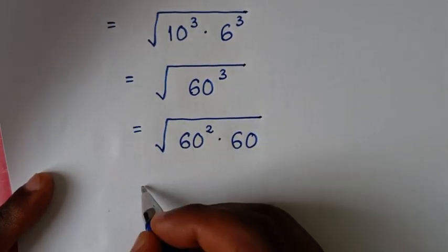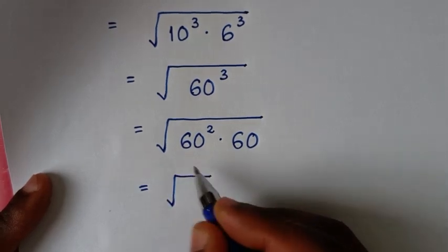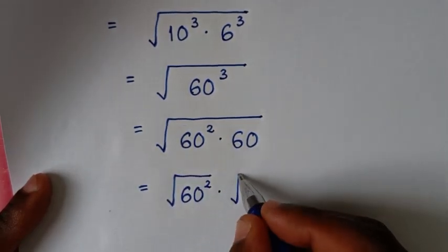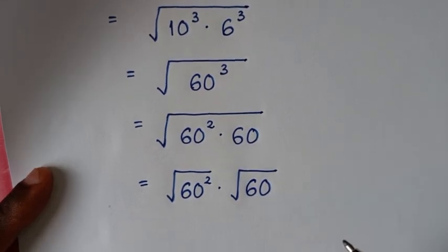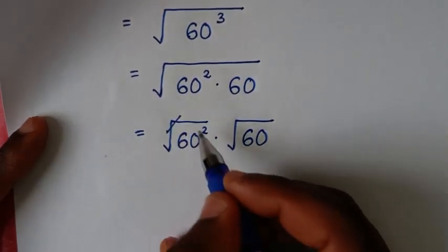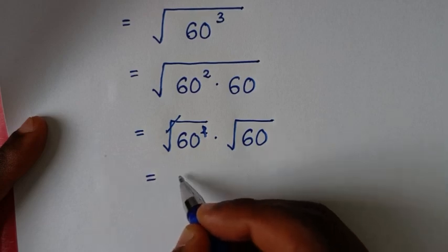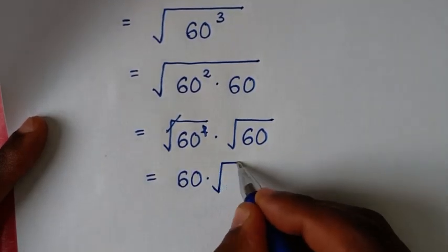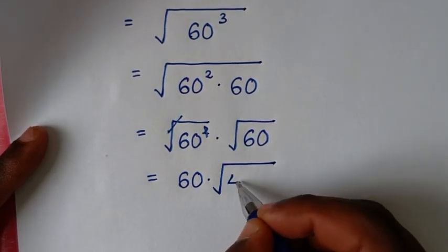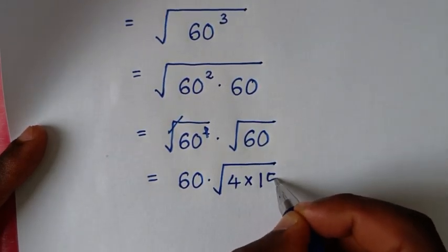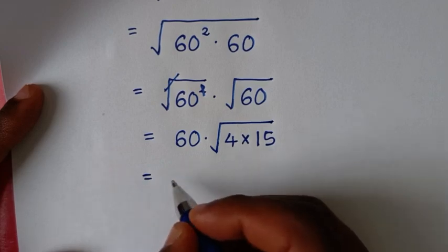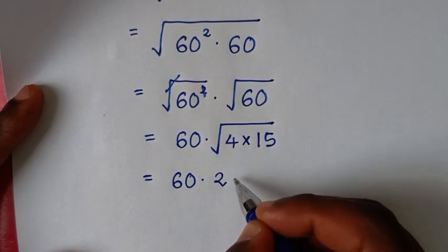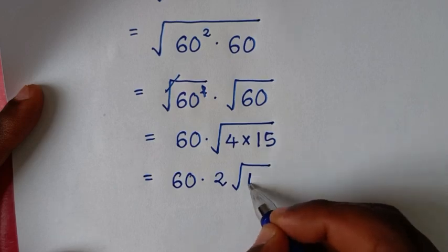Then we separate the square root, so it will be the square root of 60² times the square root of 60. The square root cancels the square, so it will be equal to 60 times the square root of 60. Then square root of 60 simplifies as square root of 4 times square root of 15, and square root of 4 is 2.